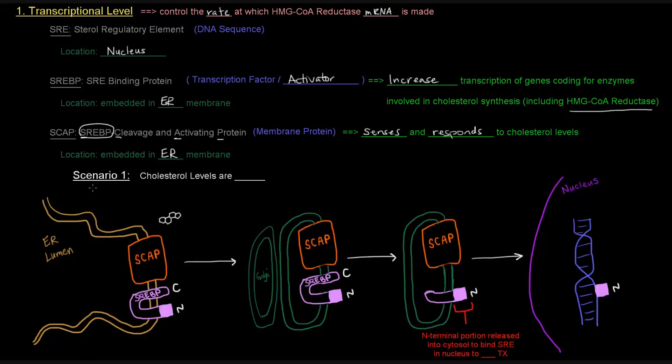So in scenario one, imagine that cholesterol levels are low. This little four-ring structure here represents cholesterol. There's only one of them. Cholesterol levels are low. So that's sensed by the SCAP protein.